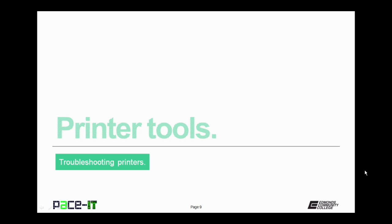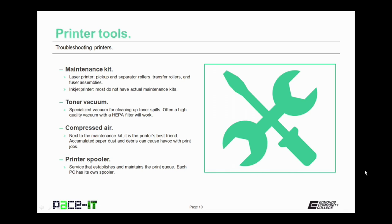Now let's talk about some tools that you can use to troubleshoot and repair printers. The first one is the maintenance kit. Laser printer maintenance kits come with pickup and separator rollers, transfer rollers, and fuser assemblies. These need to be replaced on a periodic basis to ensure the proper function of your printer. With inkjet printers, most don't come with actual maintenance kits because it's more cost-effective to replace the printer.